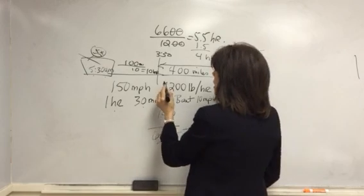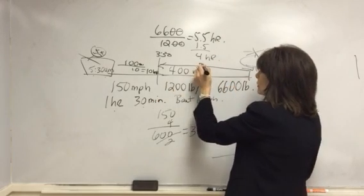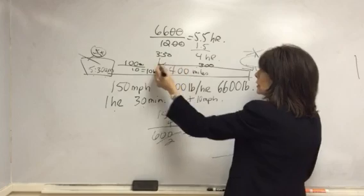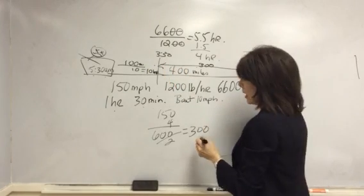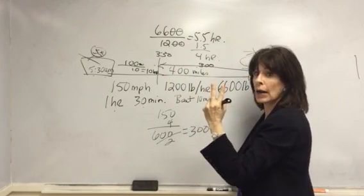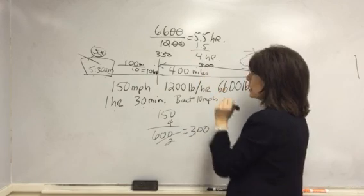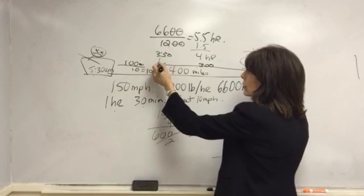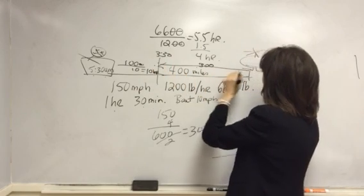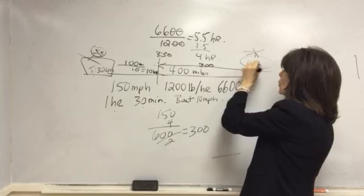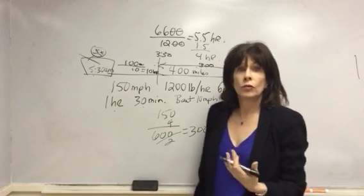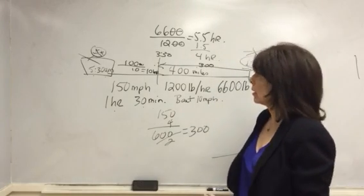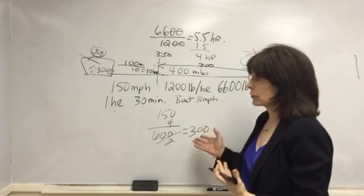Now if this guy is traveling 300 miles to get to this pickup point, and it takes him 2 hours to fly those 300 miles at the rate of 150 miles per hour, then to get there at 3:30, he has to leave here at 1:30. So you should have gotten 1:30.